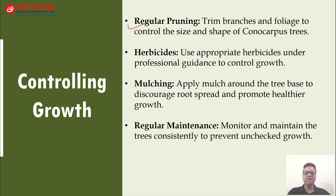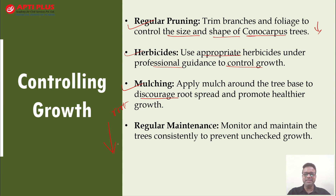There are certain procedures that can be followed. First is regular pruning — trimming the branches and foliage so that the size of the konocarpus tree remains at a controllable level. Herbicides can also be used with professional guidance to control growth. Another procedure is mulching at the tree base to discourage deep root growth, since the roots impact water pipelines.